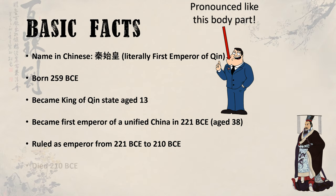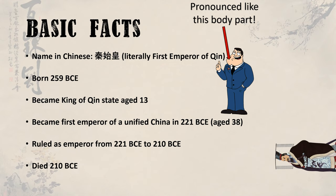How did Qin die? Well, apparently he was obsessed with immortality, or living forever. He had alchemists — an ancient form of a chemist meets scientist meets sorcerer — work to find him a potion that would help him live forever. Unfortunately, Qin supposedly died from poisoning, most likely from drinking those potions made with toxic materials like the metal mercury.